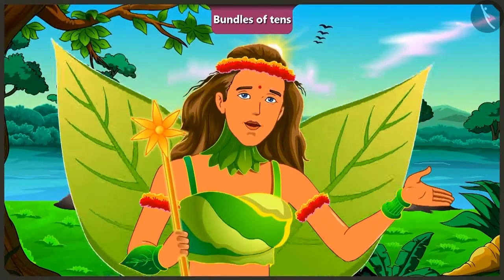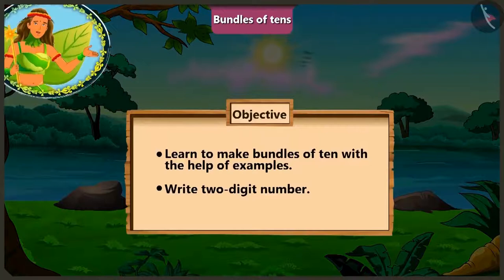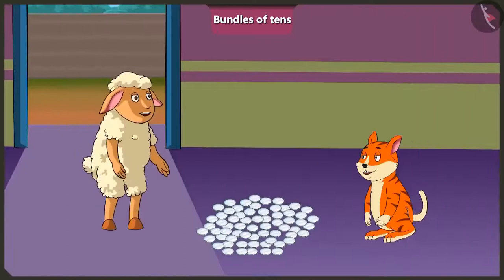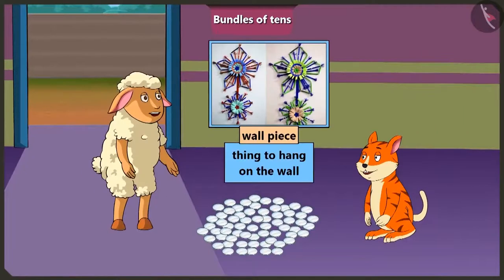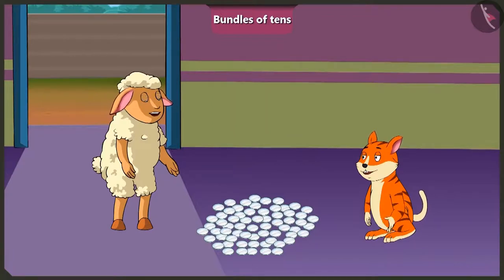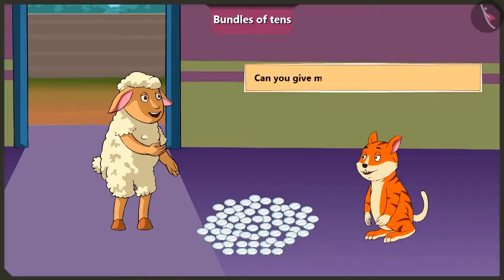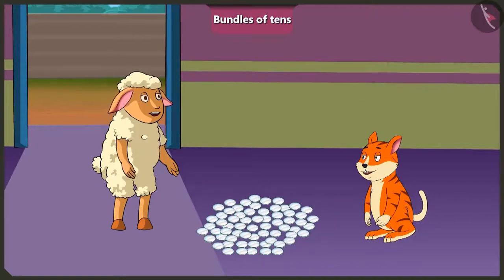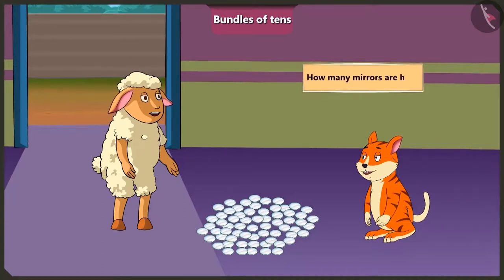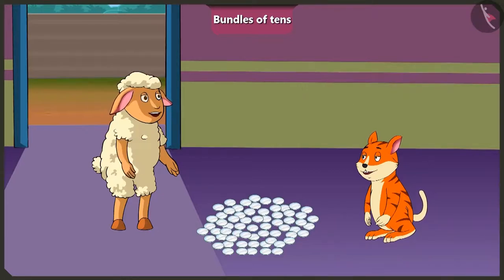Today, through some interesting examples, we will understand more about making bundles of ten and writing two-digit numbers. Billy did not finish his wall piece yet and is thinking of sticking some small mirrors on it. Lily asks Billy to give her twenty-four mirrors out of the pile, but first asks how many mirrors there are in total. Billy will count them by making groups of ten.